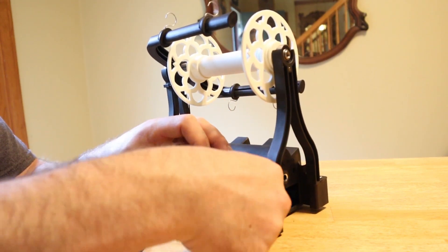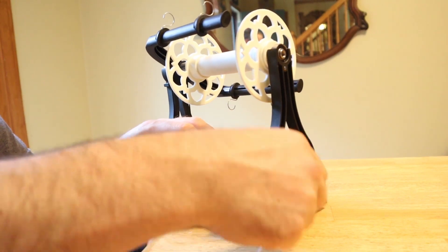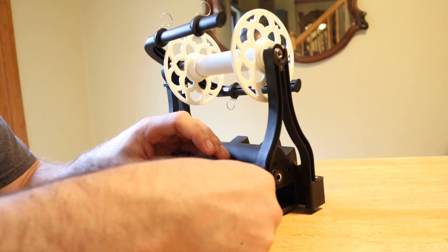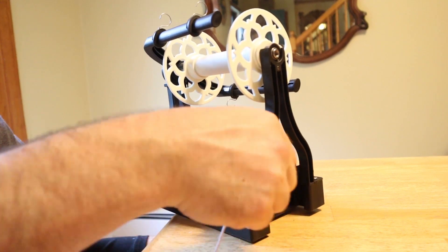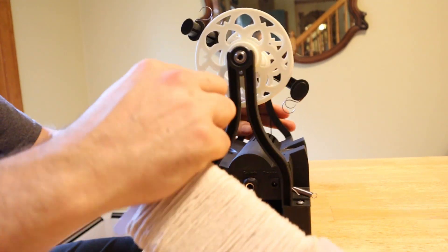When the string breaks again in the future you don't have to restring the dial end, you just have to cut off the piece on the string and then retie some extra string to the spring.